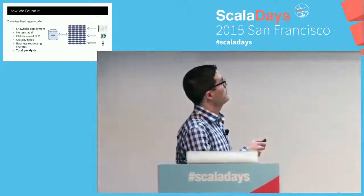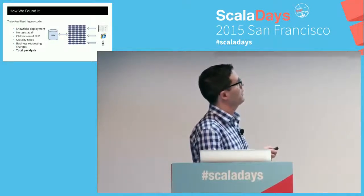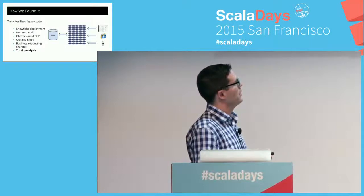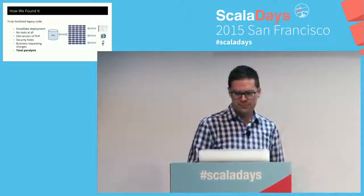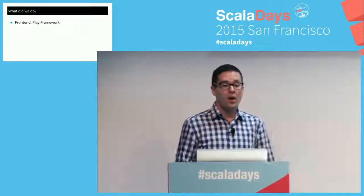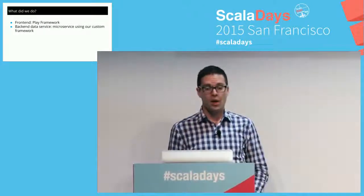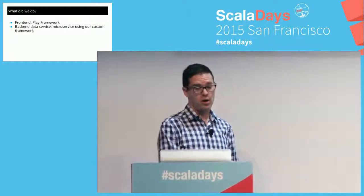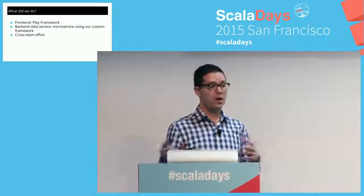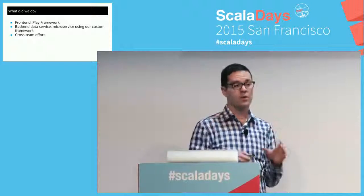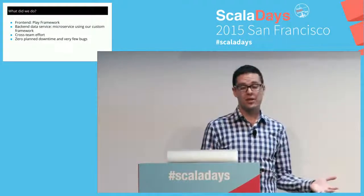The old architecture was another PHP monolith connecting to the dashboard, web browsers, and mobile. So what did we do? We rewrote the front end as a Play framework application, created a back-end data service using our custom microservices framework, and it was a cross-team effort — we pulled in members from other teams for this highly focused modernization. We did it with zero planned downtime and very few bugs. It was a drop-in replacement rather than a gradual changeover. And we did it with no huge scoping failures.